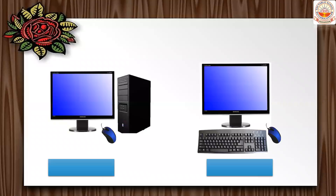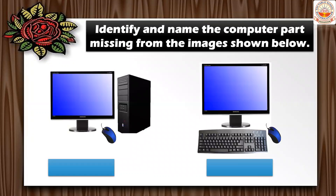Now let us do one more exercise. Identify and name the computer part missing from the images shown. In the first picture you can see a monitor, CPU cabinet, and a mouse — so the keyboard is missing. In the second picture you can see a monitor, keyboard, and mouse — so the CPU cabinet is missing.